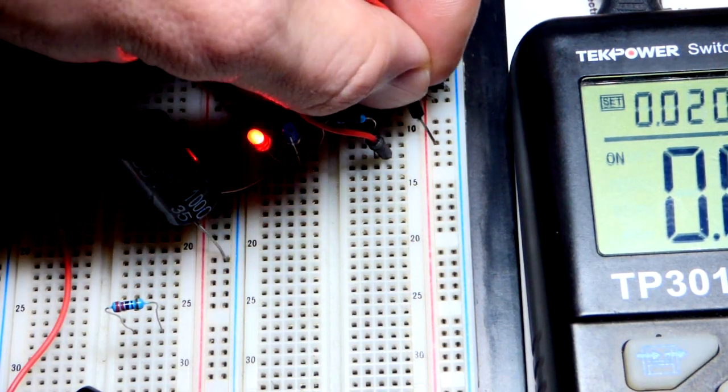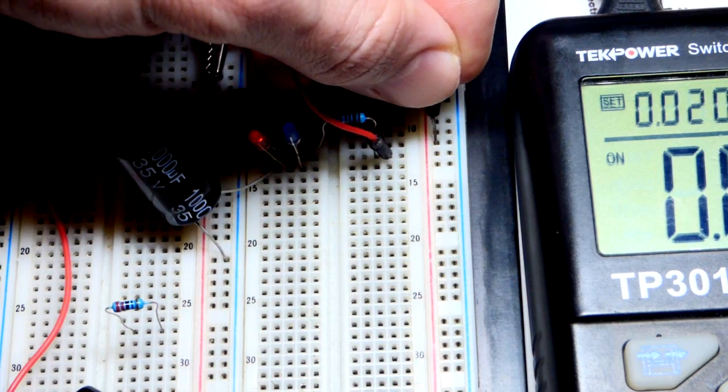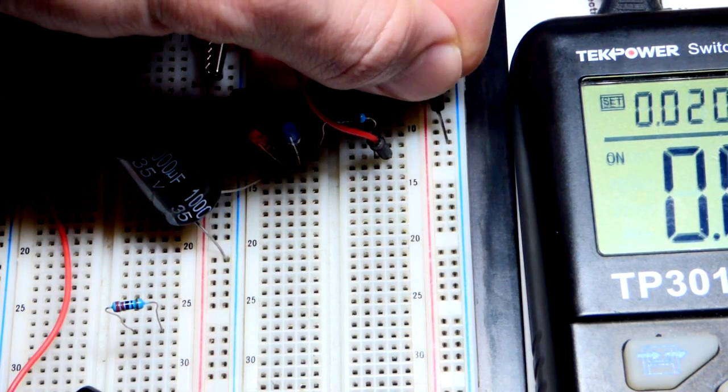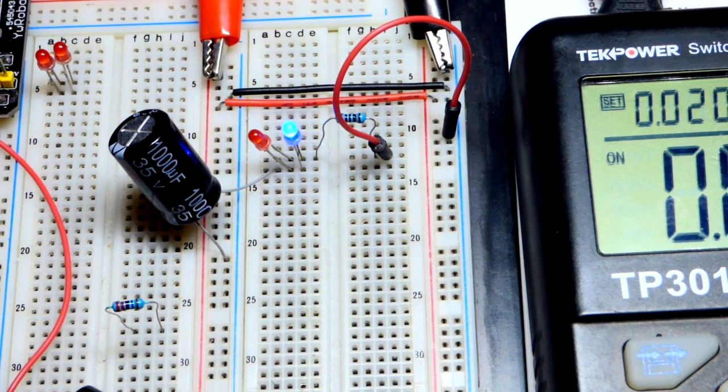So it should already be charged. And okay, it wasn't completely charged. But there we go. So you can see the red LED. Now we're going to discharge the capacitor through the blue LED. The current is going in the opposite direction.